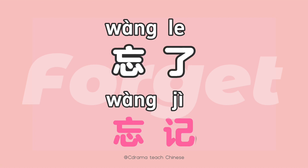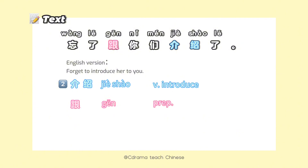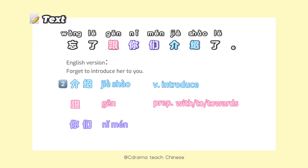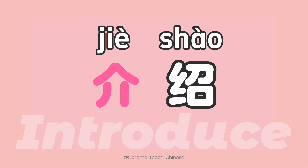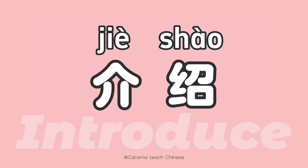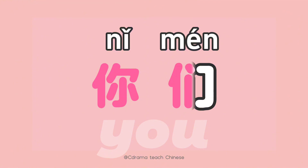The second phrase we learn is 介绍. 介绍 means introduce. 跟 as a preposition means with, to, or towards. 你们 means you (plural). So the phrase 跟你们介绍 means introduce to you all.